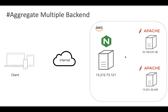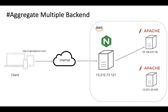In the first demo we'll see how nginx as a reverse proxy can aggregate multiple backends. For example, if a client requests nginxdemo1.com, based on the configuration nginx will forward the traffic to the first Apache server. And if another client accesses nginxdemo2.com, which points to the same reverse proxy, nginx will forward it to a different backend based on the domain and hostname.